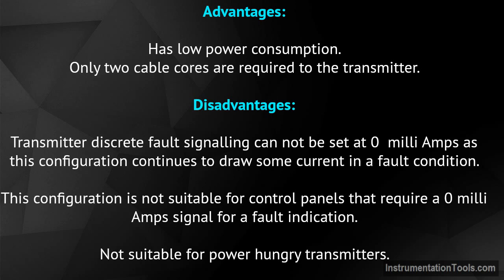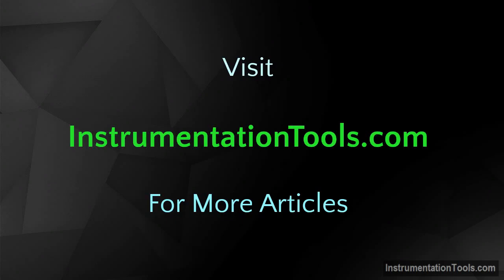Disadvantages: transmitter discrete fault signaling cannot be set at zero milliamps, as this configuration continues to draw some current in a fault condition. This configuration is not suitable for control panels that require a zero milliamp signal for a fault indication, and is not suitable for power-hungry transmitters. Visit instrumentationtools.com for more articles.